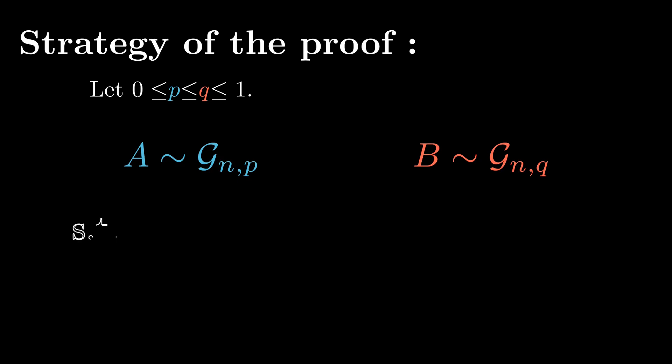Here is a potential strategy for such a proof. Let us take two parameters, p and q, with p being less than q. We want to prove that the probability that G_{n,p} is connected is less than that of G_{n,q}. For this, we will construct two random graphs, A and B, such that A has the same probability law as G_{n,p}, and B has the same probability law as G_{n,q}. However, we will construct these two graphs not independently of each other, but in such a way that if A is connected, then B also is. We say that in that case, the two random graphs are in some way coupled, hence the name coupling.